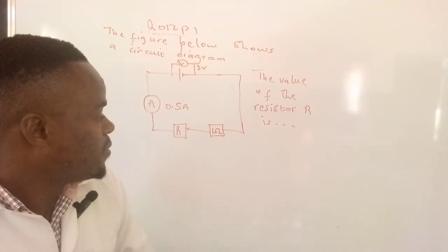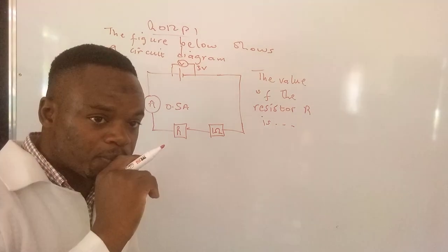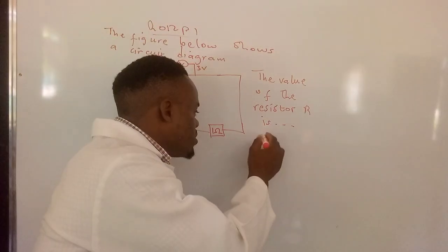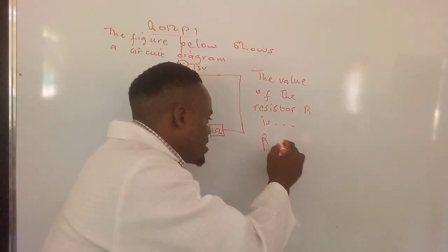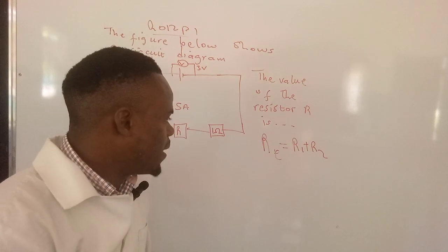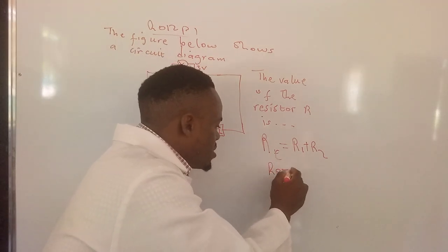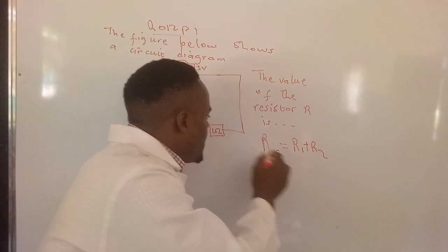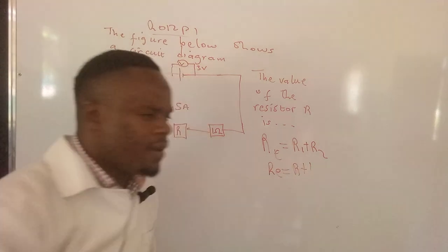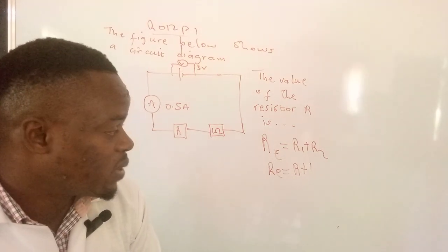Now here, what you need to realize is that the resistors are actually connected in series. So for you to find the total resistance or the equivalent resistance of these two resistors, we use the formula: equivalent resistance is equal to R1 plus R2. So what we're gonna do is say RE is equal to R1, that's the one whose value we don't know, plus R2 which is 1. Now the thing is, R and 1 are unlike terms so we can't add them, so we leave them the way they are.